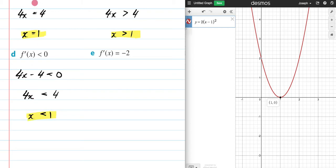And now let's answer our final one. Our derivative is equal to negative 2. So I'm going to go 4x - 4 is my derivative. Let's set it equal to -2, and then solve for x.